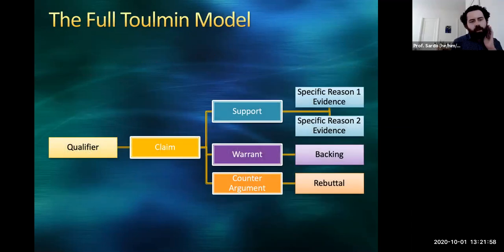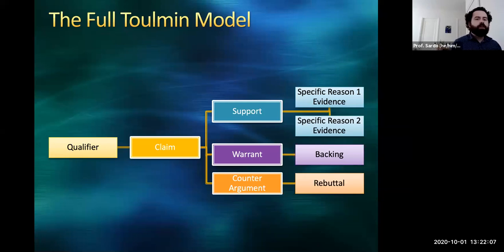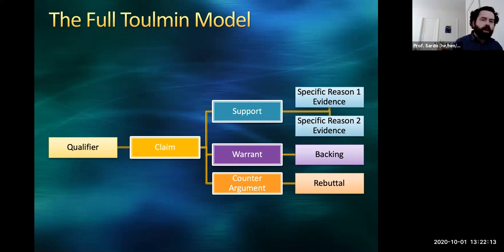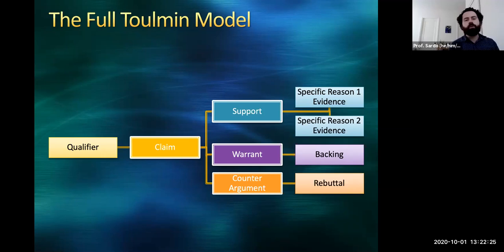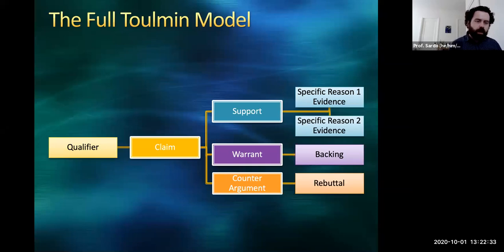Toulmin develops this into a fuller model. We have our claim-support-warrant structure, and then our support can be broken down into specific reasons — we might have two, three, or four specific reasons that we believe the argument is true. For each of those specific reasons we're going to have specific pieces of evidence: data we've analyzed, evidence from texts or interviews, or examples from experience. Depending on the nature of your argument, you might also provide additional backing or supporting evidence for the warrant.